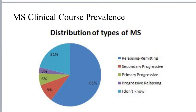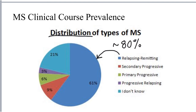The graphic shown here depicts the distribution of those various clinical courses of MS. As mentioned, relapsing-remitting is by far the most common clinical course at initial presentation, with upwards of 80% of patients being characterized as relapsing-remitting. About 10% of patients are characterized as primary progressive at initial presentation, and even fewer — less than 5% — are characterized as progressive relapsing.